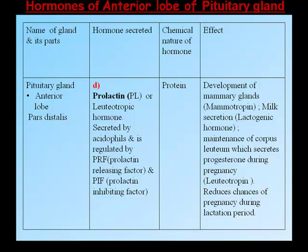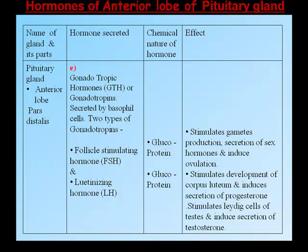Prolactin (PL) or luteotrophic hormone is secreted by acidophils and regulated by prolactin releasing factor (PRF) and prolactin inhibiting factor (PIF). Its chemical nature is a protein. Its effects include: development of mammary glands (mammotrophin), milk secretion (lactogenic hormone), maintenance of corpus luteum which secretes progesterone during pregnancy (luteotropin), and reduction of chances of pregnancy during the lactation period.